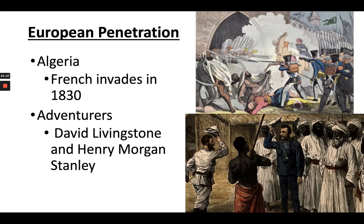In Egypt, Muhammad Ali tried to modernize by creating an industrial economy based on cotton. But the British strong-armed their way into killing that economy — the burgeoning Egyptian industrial process couldn't compete with the already established businesses in Britain. So the Egyptians were stuck just growing and exporting cotton as a raw material. The population increased, and you do see some attempts at investment in local infrastructure.